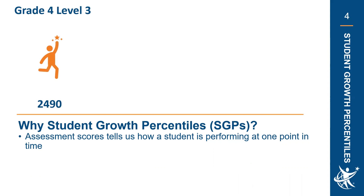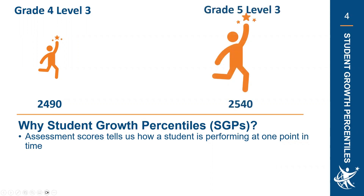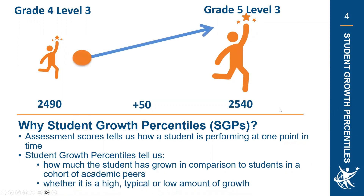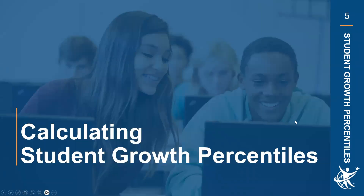That score is one point in time showing that they met standard. Now, that same student in grade five scores a 2540 on the fifth grade SBA in English Language Arts — an increase of 50 scale score points over one year. We need student growth percentiles to understand how this student is growing, because the change in score alone does not tell us how they compare to their academic peers, or whether this growth is high, typical, or low.